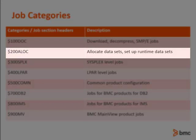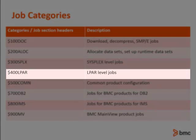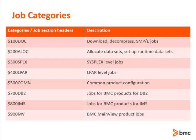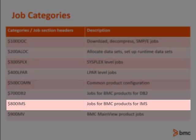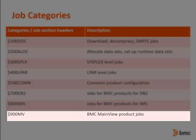$2 jobs are for allocating datasets and setting up the runtime environment. $3 jobs are for anything that needs to be set up at a sysplex level. $4 jobs are for anything that needs to be set up at an LPAR level. $5 jobs are for anything that is common and crosses product categories. $6 jobs are reserved for future use. $7 jobs are for configuring any DB2 product. $8 jobs are for configuring any IMS product. $9 jobs are for configuring any MainView product.